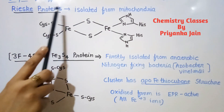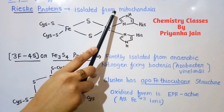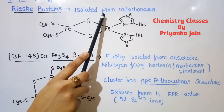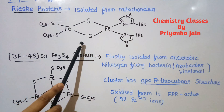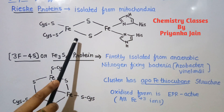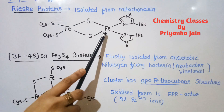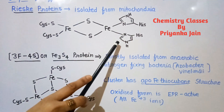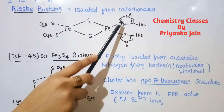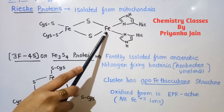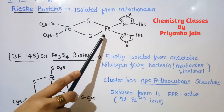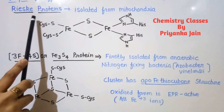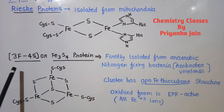Another important type of 2Fe2S protein that has been found is the Rieske protein, which is isolated from mitochondria and is involved in electron transfer reactions. One important difference is that in the Rieske protein, two non-sulfur ligands are attached to the iron — this is the key structural difference compared to the standard 2Fe2S ferredoxin.